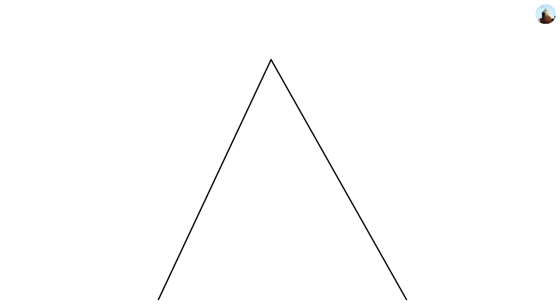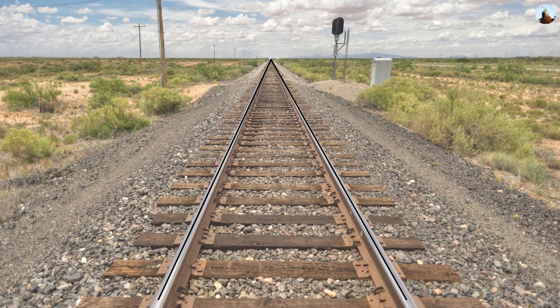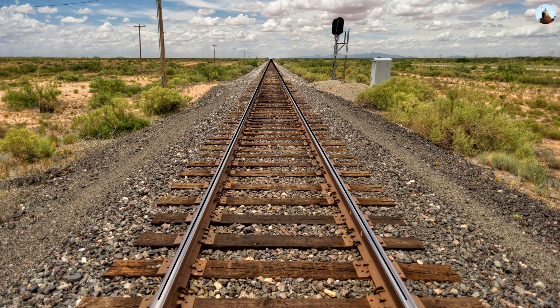A significant clue that vision is not Euclidean is that it breaks Euclid's fifth postulate, which states that parallel lines never meet. Here we see two parallel lines of a railway track. We know that they don't really meet, but according to our eyes and cameras they are perceived to meet in the distance. Due to the limitations of vision, it must therefore be assumed that vision is not Euclidean.